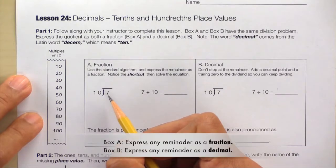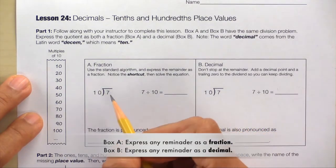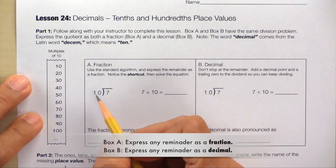In lesson 24 we're going to be working with decimals to the tenths and hundredths place values. Take a look at part one. Box A and Box B have the same division problem of 7 divided by 10.